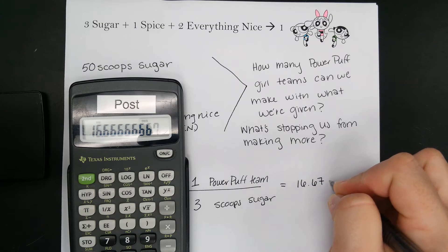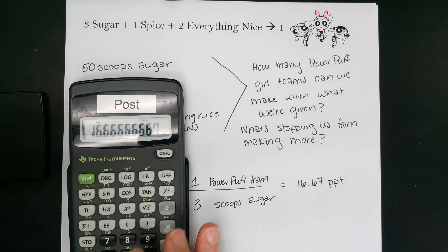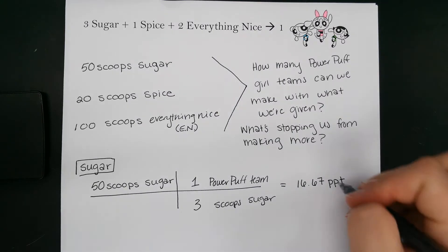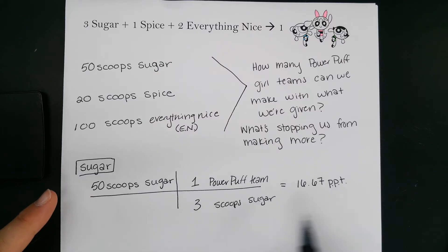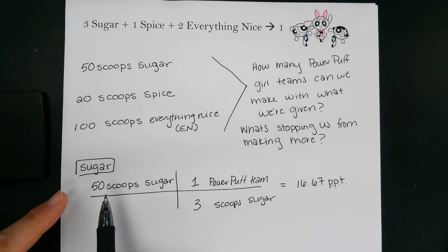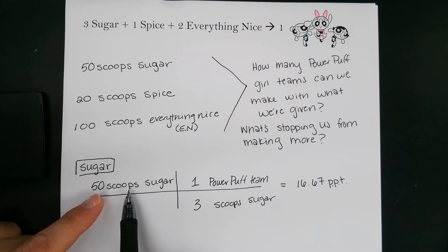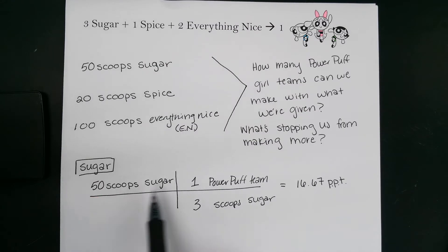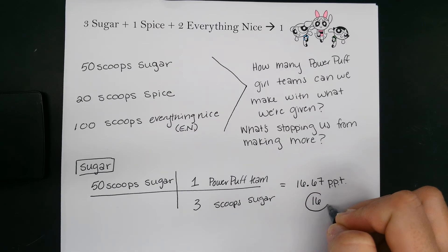We calculate 50 times 1 divided by 3, and we get about 16.67 Powerpuff teams. This conversion is saying: if we have unlimited spice and unlimited everything nice, and it was only dependent upon the 50 scoops of sugar, we would be able to make about 16 whole Powerpuff teams.